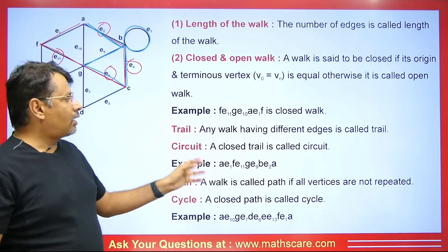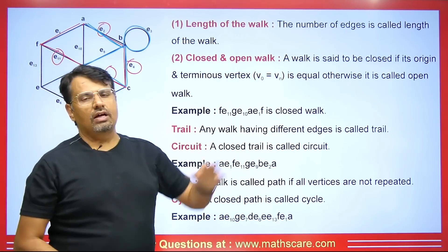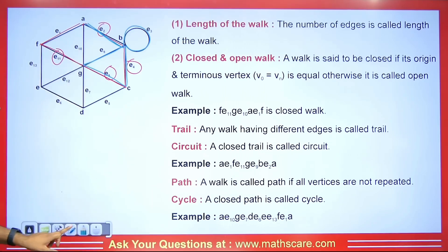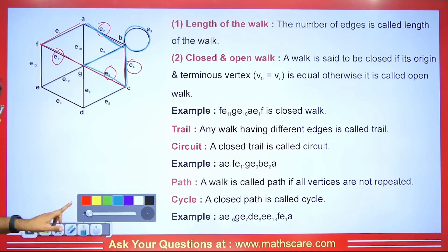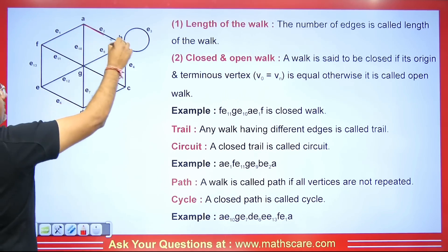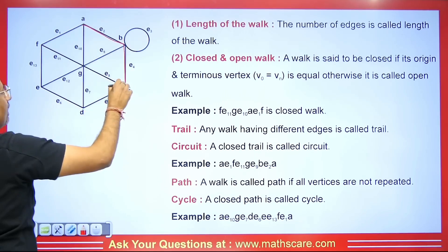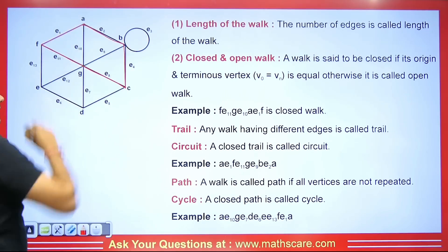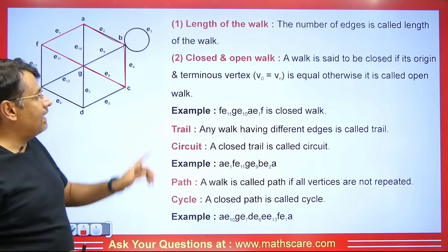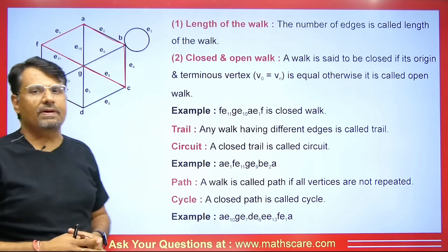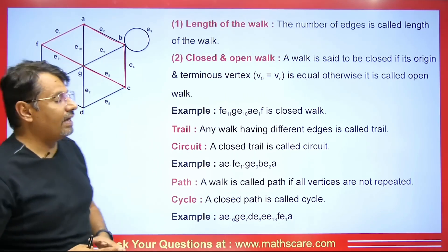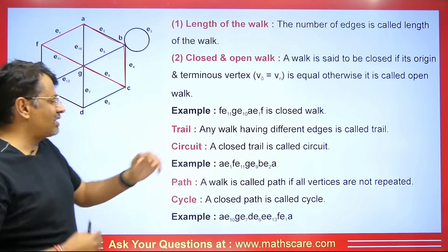Let's talk about circuit. A closed trail is called a circuit. If we take the red-colored closed trail — we start from here, go here, go here, go here, and come back here — you can see no edge is repeating, and it is closed. So this is both a walk and a trail, and since it is closed, this will be a circuit.